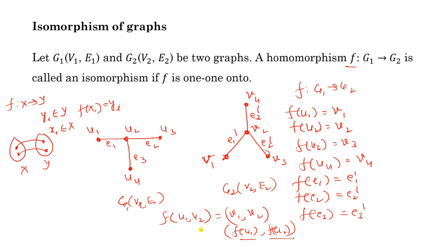The simple meaning of isomorphism is 'similar.' When we talk about isomorphism, it means the two graphs are similar — for each vertex there is a vertex with the same degree, and for each edge there is a corresponding edge. If edge e1 is between u1 and u2, the corresponding edge e1 dash must be between v1 and v2, where v1 corresponds to u1 and v2 to u2.